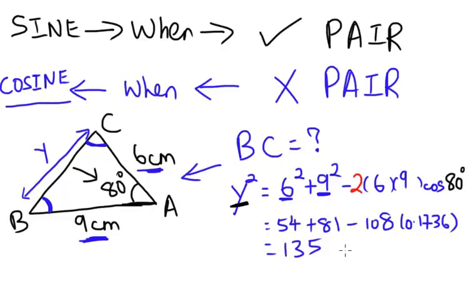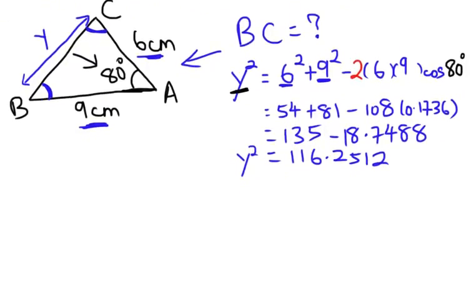So 108 times 0.1736, and what do you get from there? You get 18.7488. So we minus it. 135 minus 18.7488, which is 116.2512. And remember, this is y square. So to get the y, we need to square root it. You are right. We need to do the square root.